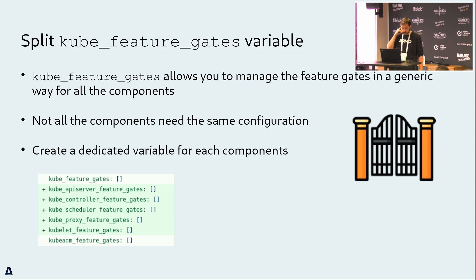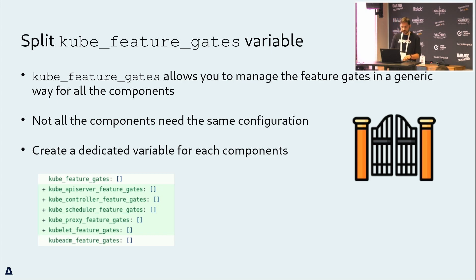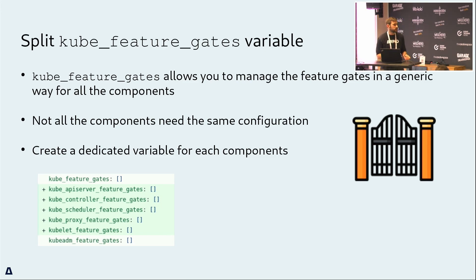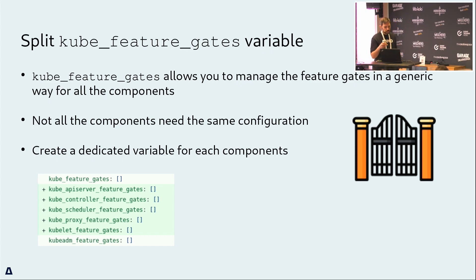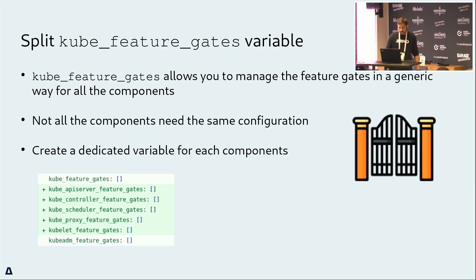Another contribution: splitting the feature gates variable. At the beginning, this single variable was managing all components — you could describe the feature gates to be enabled across all components. But that's not ideal because not all components need to be configured the same way. Specifically, the kubelet has feature gates not present in other components. We split this variable and provided a single variable per component, while still allowing use of the legacy kube_feature_gates variable.